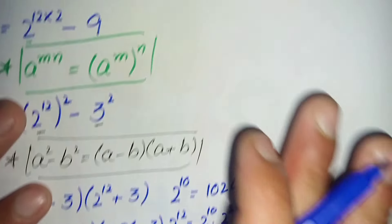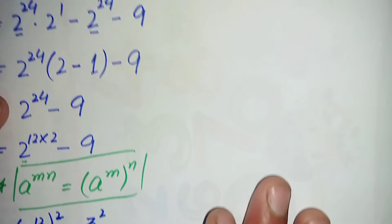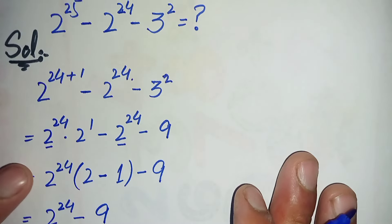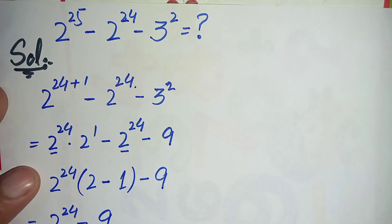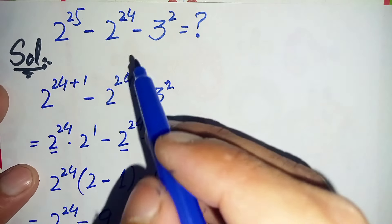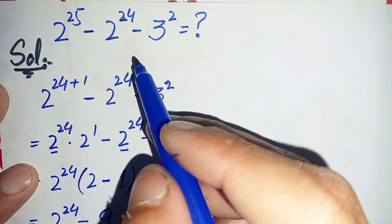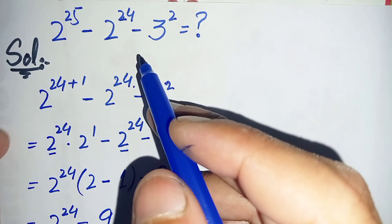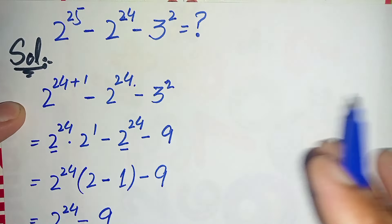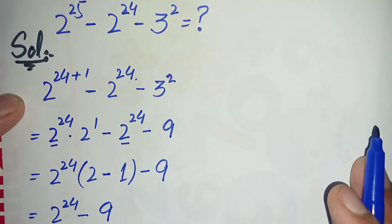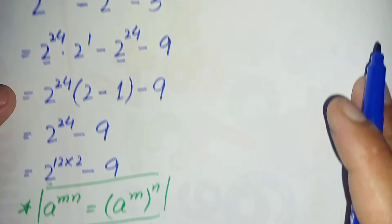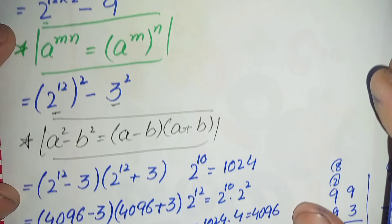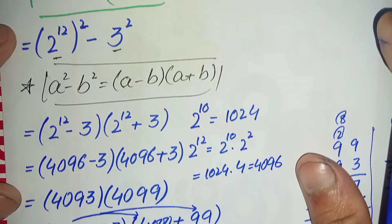Finally, 16 million, 777 thousand, and 207 is our answer and the value of this simplification math problem. If you like this video, don't forget to subscribe to my YouTube channel. Thanks for watching.